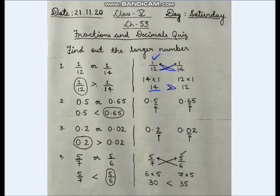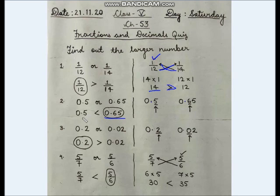Next is decimal numbers: 0.5 or 0.65. After the decimal point, the digit is 5 for the first number, and 6 for the second. Since 6 is greater than 5, 0.65 is the greater decimal number.